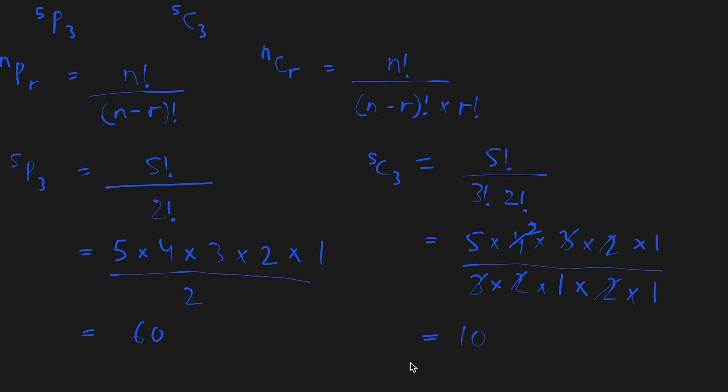You might have noticed that for the same values of n and r, there are more permutations than combinations. This is because every single combination has to be arranged 6 times before we get the number of permutations. This is because in permutations the order in which the elements are present is important, but in combinations it is not.